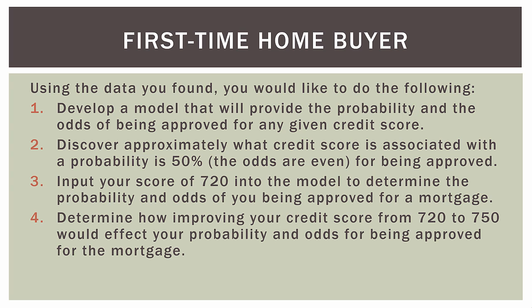And finally, determine how improving your credit score from 720 to 750 would affect your probability and odds of being approved for the mortgage. So let's say your score is 720. You're going to wait a little bit and see if you can get your credit score up to 750 by paying down some debt. Maybe you're going to get a promotion and a higher salary sometime soon, and you think your score may improve. You want to know how that improvement would affect your probability and odds of being approved.